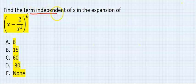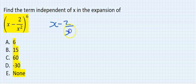Find the term independent of x in this expansion. Step 1: (x minus 2 over x squared) to the power of 6.